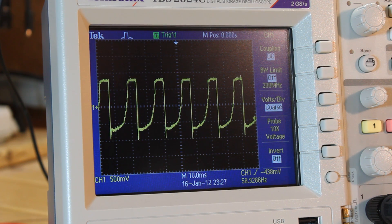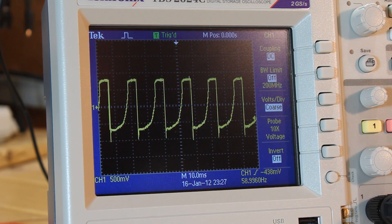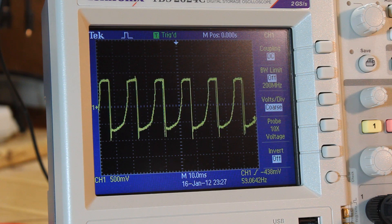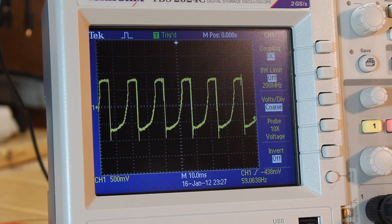If you wanted to calculate the RPMs, there's four magnets. So basically take four pulses and that is one rotation. So from there you should be able to calculate it.